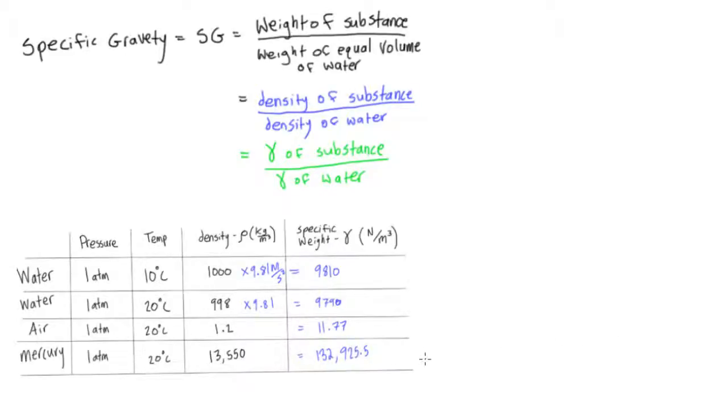For mercury, let's say specific gravity is going to equal the specific weight of mercury, let's say that's Hg, over the specific weight of water, so a specific weight of newtons per meters cubed divided by 9790 newtons per meter cubed.